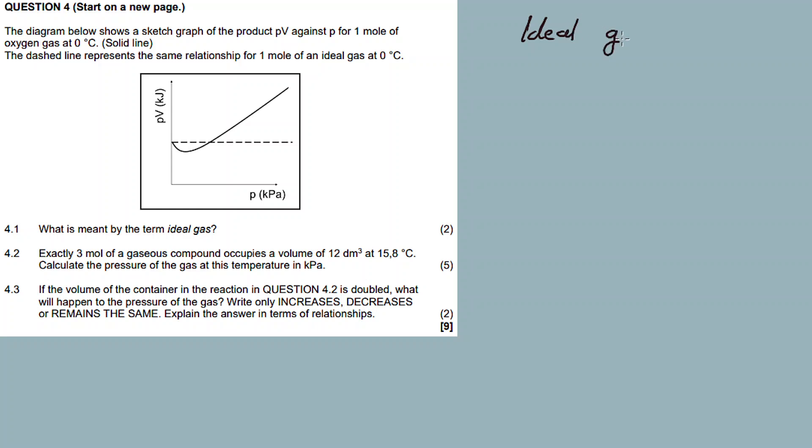The ideal gas law is like the theory of everything. It combines Charles's law, Boyle's law, and others. It's being described by this equation: PV is equal to nRT.